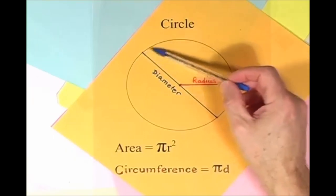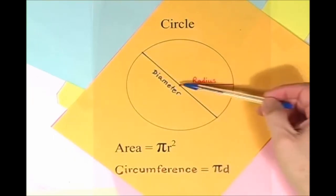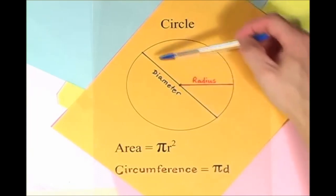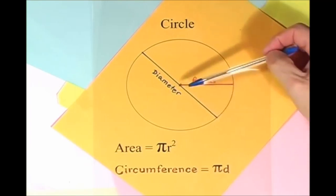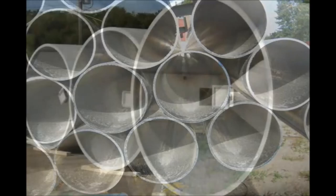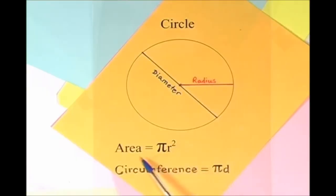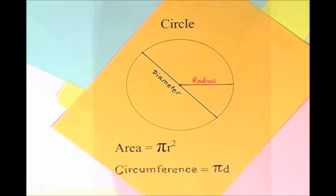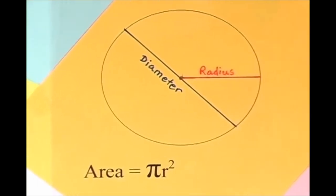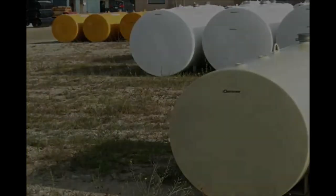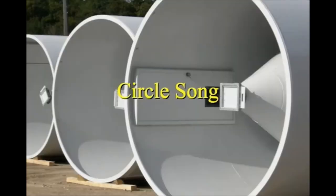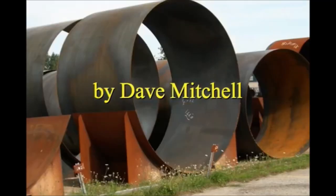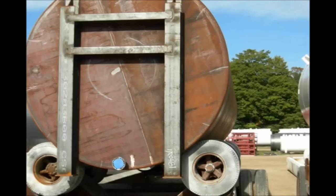Here is a circle, it knows how to get around. It has a radius from center to rim. And its diameter's a line that goes from side to side while passing through the center, now isn't that simple. Pi r squared sounds like area to me, when I need a circumference, I'll just use pi d. Pi r squared sounds like area to me. Here is a circle.